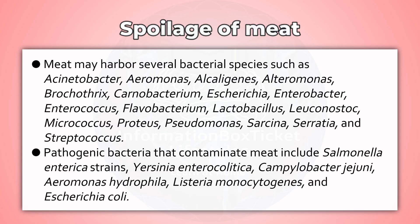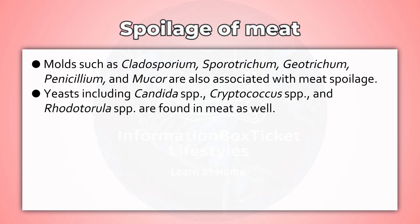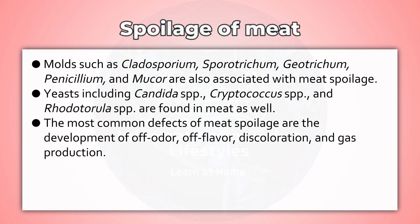Pathogenic bacteria that contaminate meat include Salmonella enterica strains, Yersinia enterocolitica, Campylobacter jejuni, Aeromonas hydrophila, Listeria monocytogenes, and Escherichia coli. Molds such as Cladosporium, Sporotrichum, Geotrichum, Penicillium, and Mucor are also associated with meat spoilage. Yeasts, including Candida species, Cryptococcus species, and Rhodotorula species, are found in meat as well.